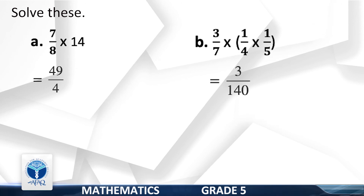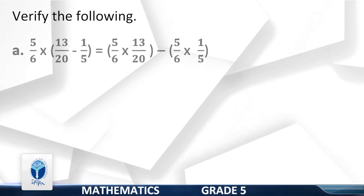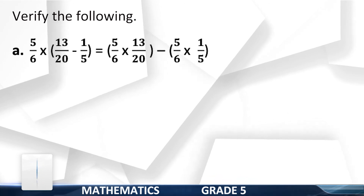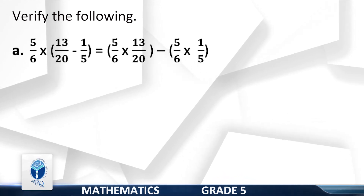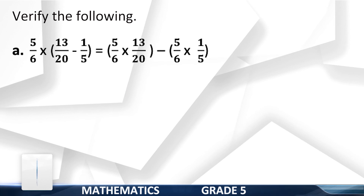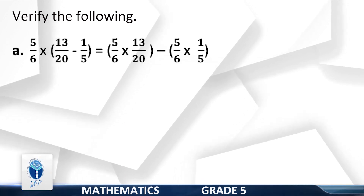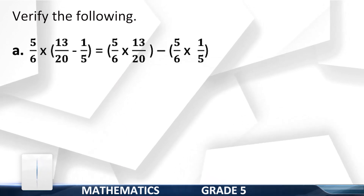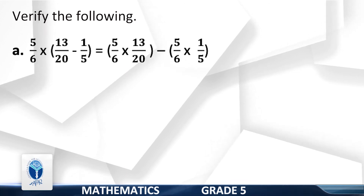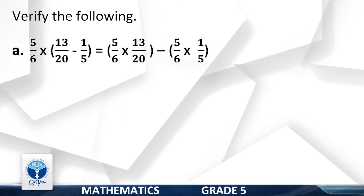Verify the following. Part A: 5/6 into (13/20 minus 1/5) equals (5/6 multiplied by 13/20) minus (5/6 into 1/5).